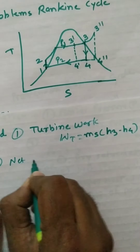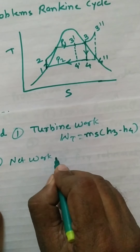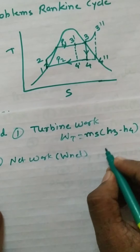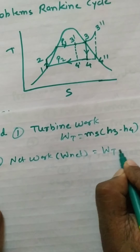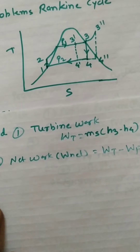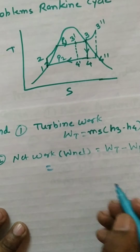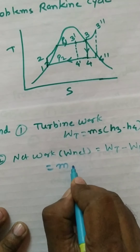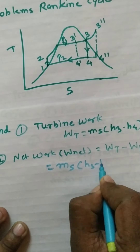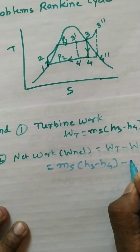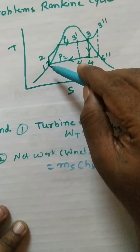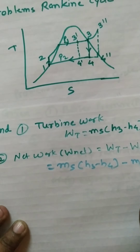The second parameter often asked is net work Wnet, which equals turbine work minus pump work. Turbine work is H3 minus H4, and pump work is H2 minus H1. So Wnet = (H3 - H4) - (H2 - H1).